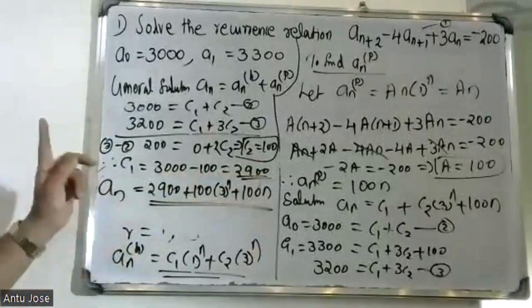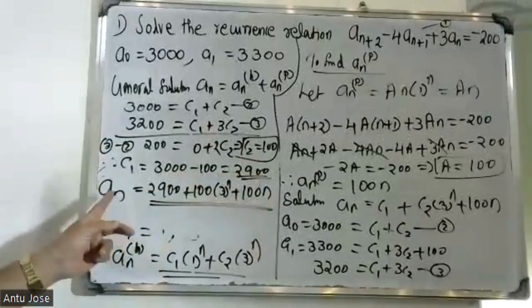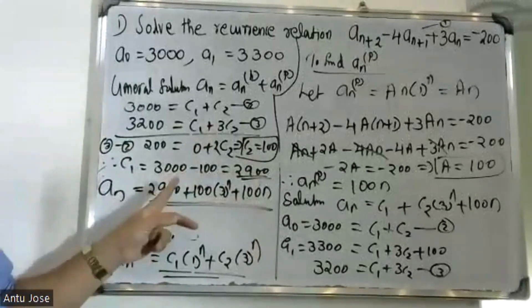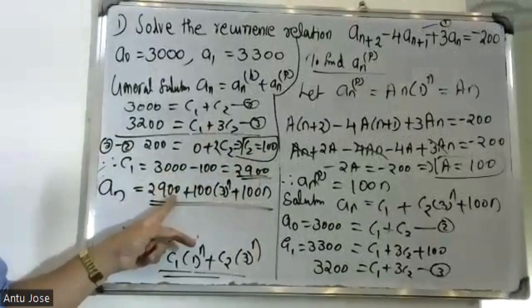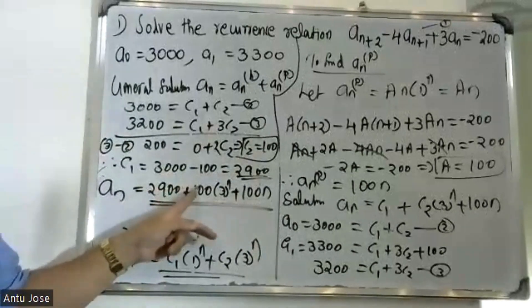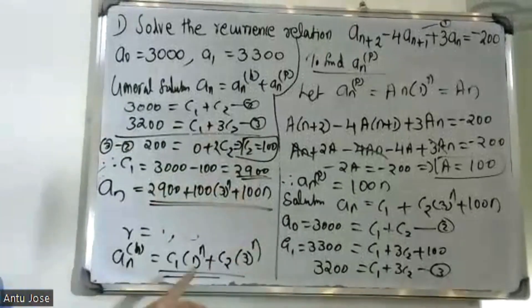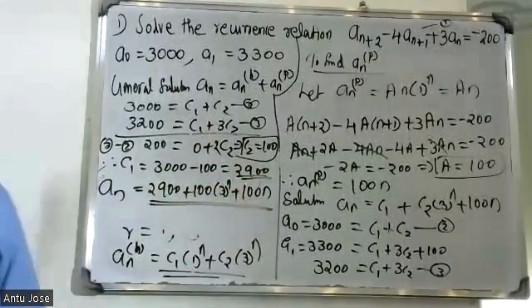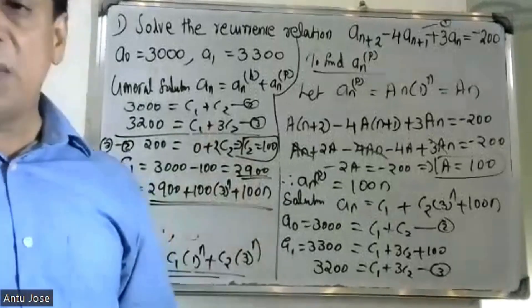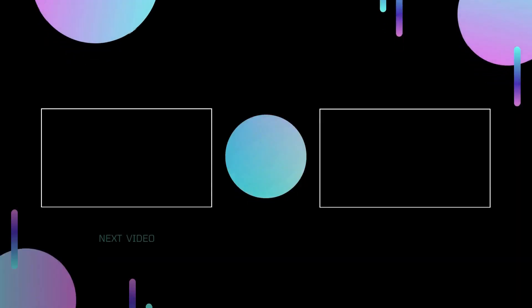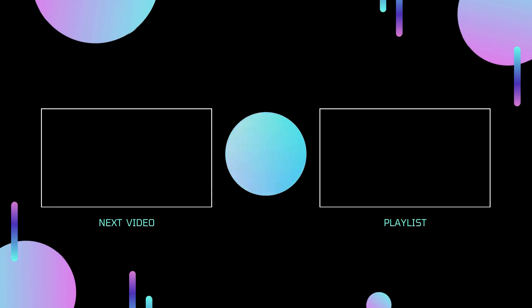The final answer is a(n) equals 2900 plus 100 into 3 raised to n plus 100. This is the final answer.